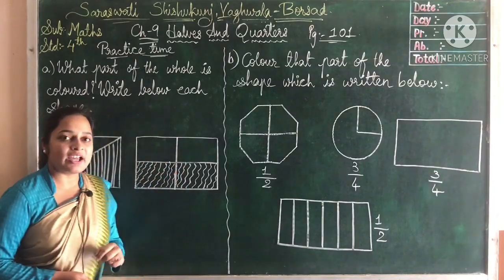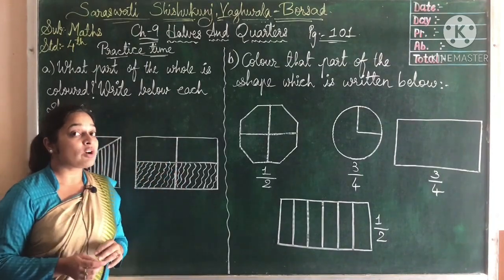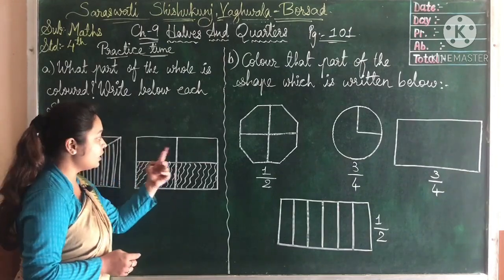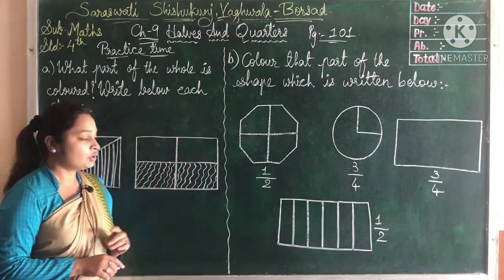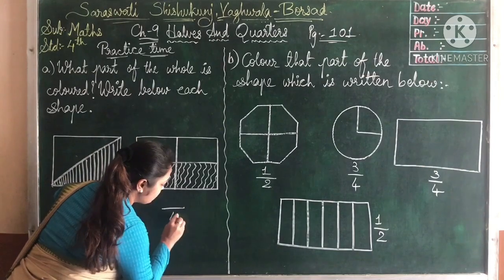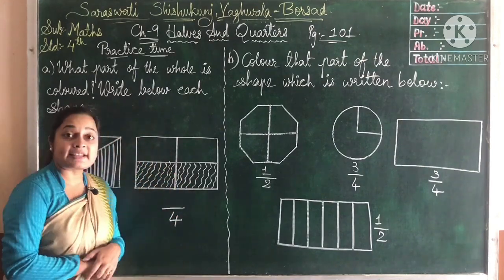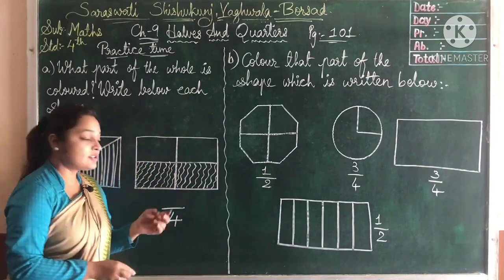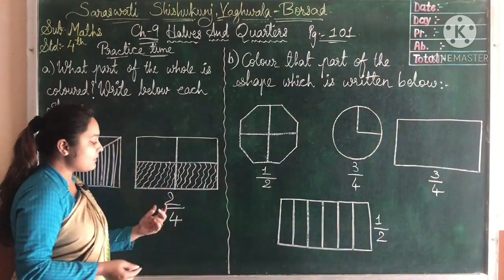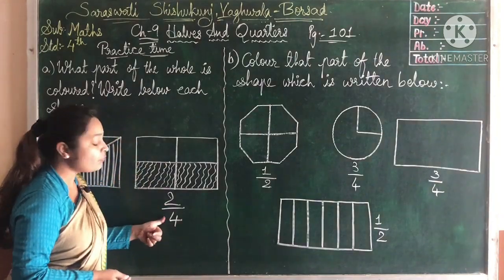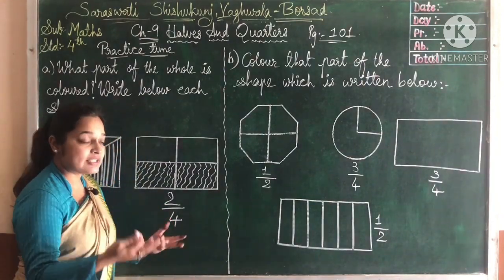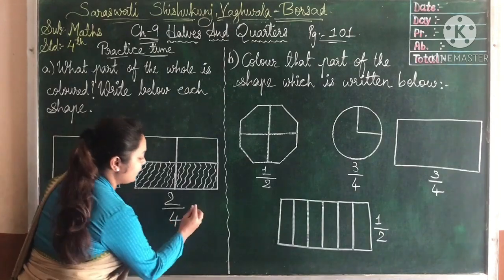Here you will see that we are having quarters — four quarters are there: one, two, three and four. So the denominator will be four. And two parts are shaded, so the numerator will be two. But if you will see, two-fourth is a half.